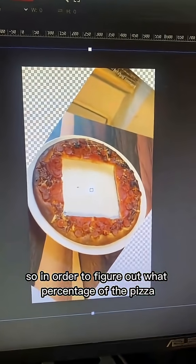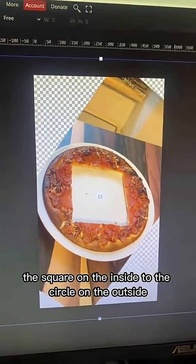So in order to figure out what percentage of the pizza you actually ate, we need to take the ratio of the area of the square on the inside to the circle on the outside.